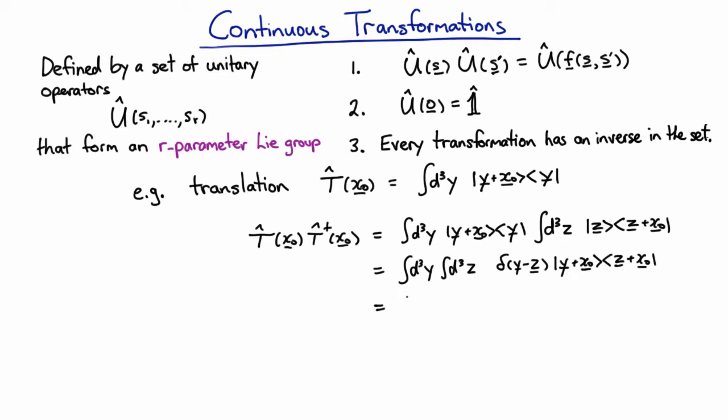I'll just get rid of the z, and all z's turn into y's. We can just change variables by translating our variables because we're going from minus infinity to infinity. From our completeness relation, we know that is just the identity. We have shown that this translation operator is indeed unitary.